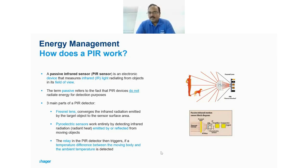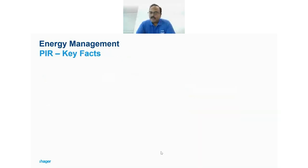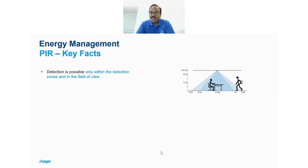Some key facts about PIR use: first, it can only detect within the detection zones specified in the technical sheet. For example, a product with a 6-meter diameter detection zone — 3-meter radius — means that if a room is 8 meters wide you may need two units. This is the first understanding. Second, it requires a clear field of view — if a shelf is blocking the path, it cannot sense movement in that area.